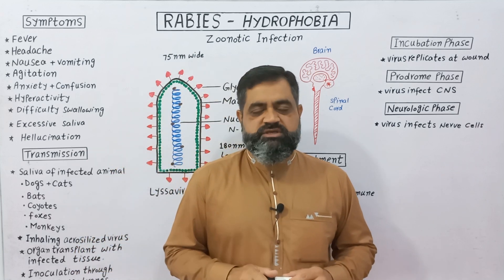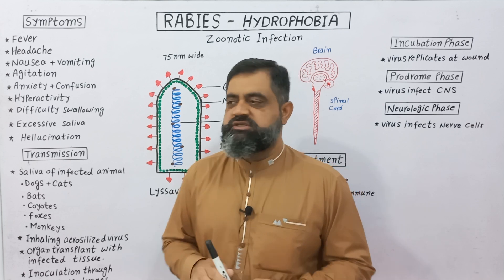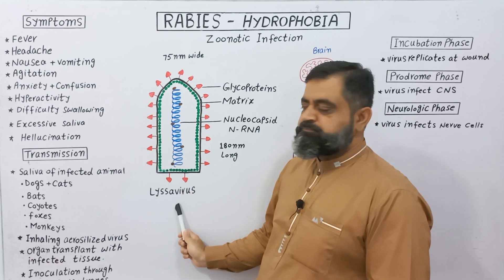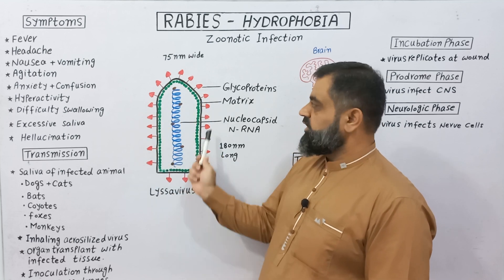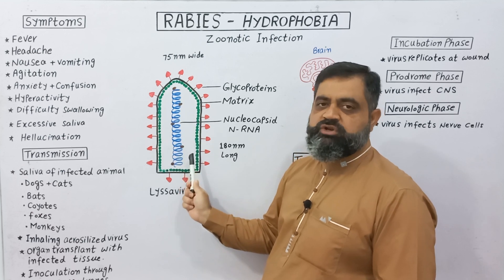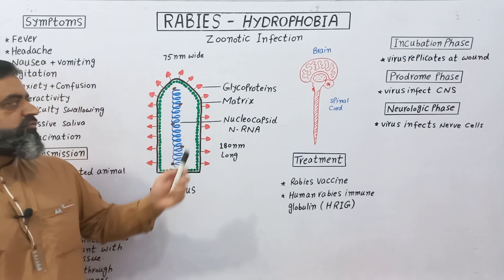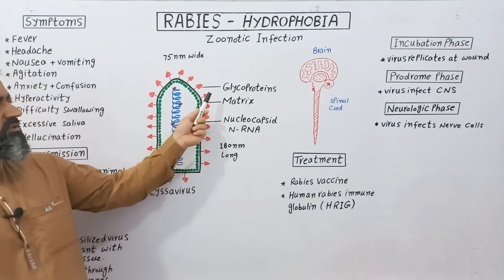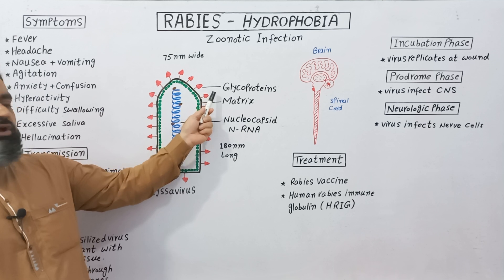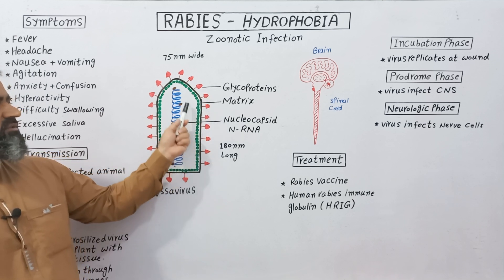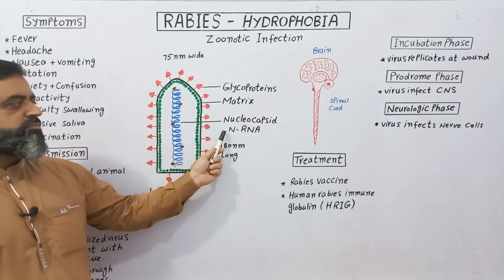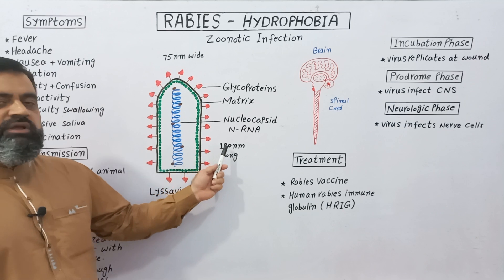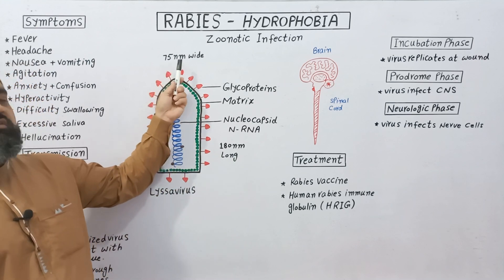The cause of rabies is an RNA virus known as the Lyssavirus, as shown in this diagram. It is a bullet-shaped virus which contains an outer covering and an inner core which contains its nucleic acid. The outer covering is made up of glycoproteins which have spikes on the surface. Just below the glycoprotein outer covering there is a matrix, and inside the matrix there is a core known as the nucleocapsid, which is made up of RNA that can encode for five different types of proteins. The length of the virus is 180 nm and the width is 75 nm.